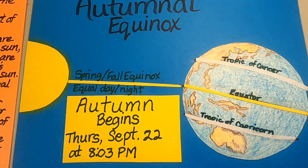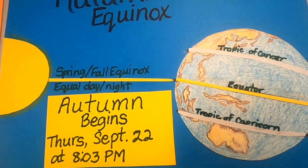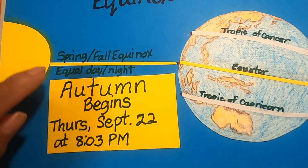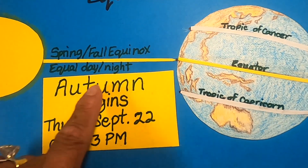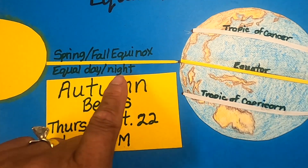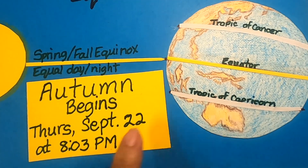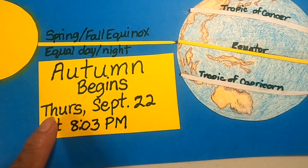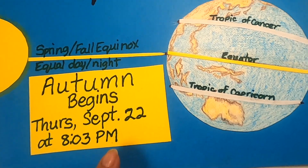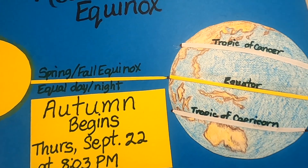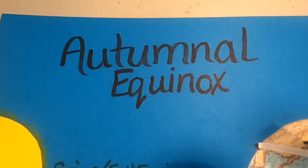Grandma went on ahead, and here's the drawing. As you can tell, here is the sun, and it says spring and fall equinox — equal day and night — and it's pointing to this yellow line here. Autumn begins Thursday, September 22 at 8:03 p.m. This is what you call the autumnal equinox.